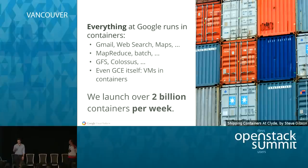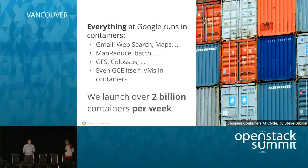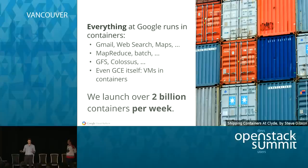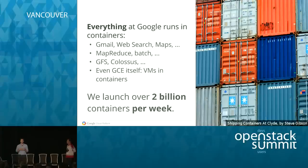By way of background, Google has been running containers for many, many years. Every single service that Google runs — whether it's Gmail, Search, Hangouts, et cetera — all of it runs inside containers. That runs on an infrastructure called Borg, which is the container management infrastructure that inspired Kubernetes. The same people that developed Borg, which runs all these scale services, also built and designed Kubernetes. They took the concepts that drove this massive learning that Google had to go through to get to their current scale.